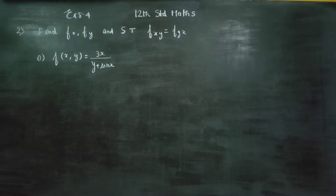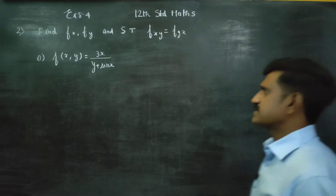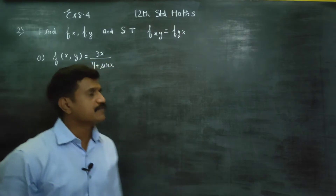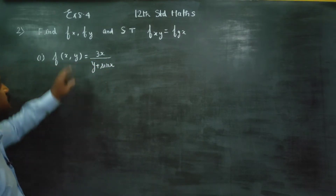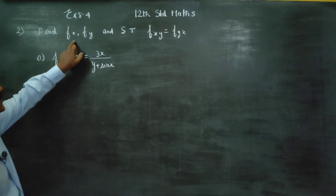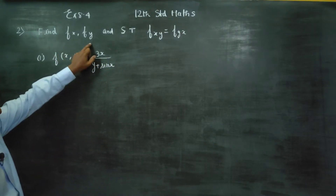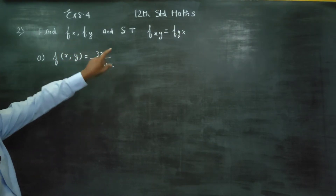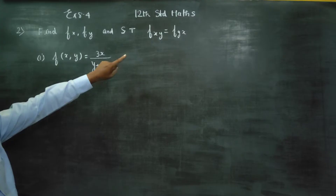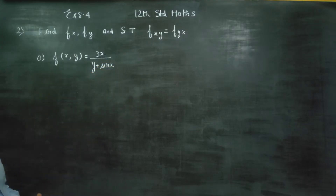Dear 12th standard students, in exercise 8.4, sum number 2: find fx and fy — partial differentiation with respect to x and with respect to y — and show that fxy is equal to fyx.